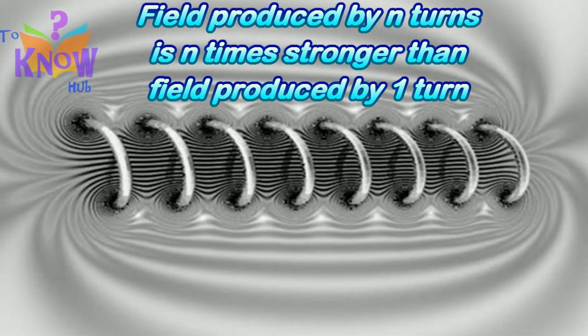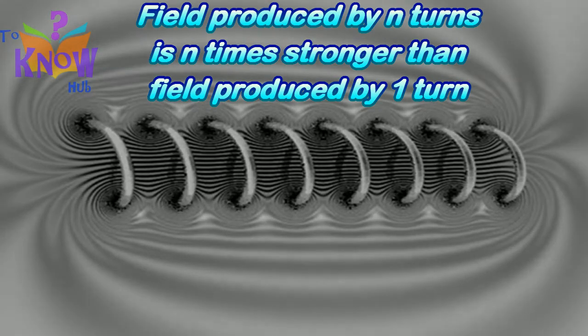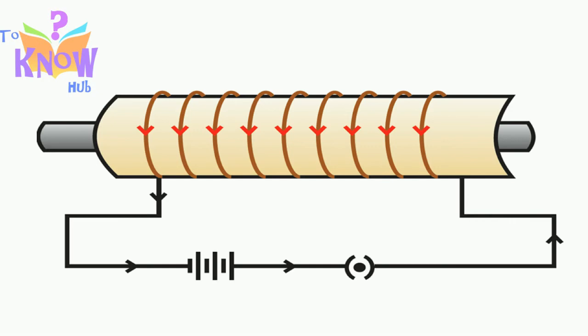If we put an iron bar inside this solenoid, it would turn into a magnet under the influence of this magnetic field. This process is called magnetic induction. So, now you know the nature of magnetic field created by electric current.